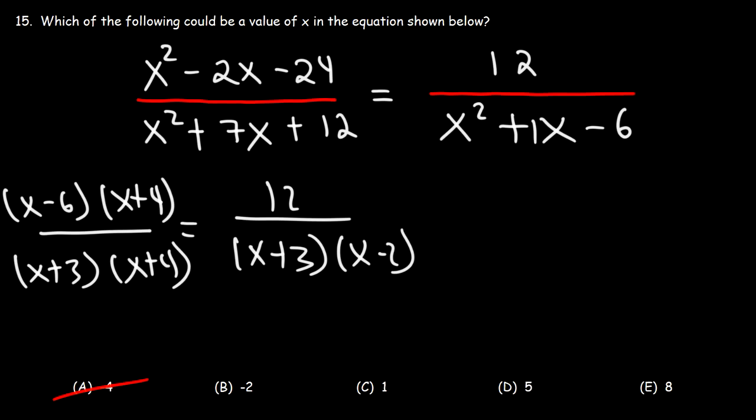So now, what we can do at this point is cancel. We can cancel x plus 4. And if we multiply the right side and the left side by x plus 3, we can cancel the x plus 3 factors.